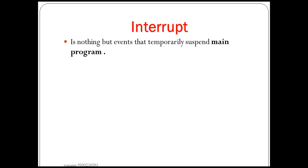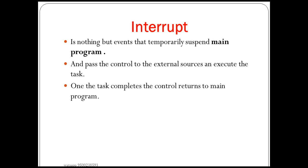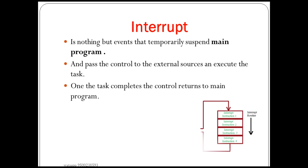An interrupt is nothing but an event that temporarily suspends the main program. This is a temporary interruption of the main program — that is the interrupt signal. It passes control to an external source, executes the task, and then returns to the main program to continue.